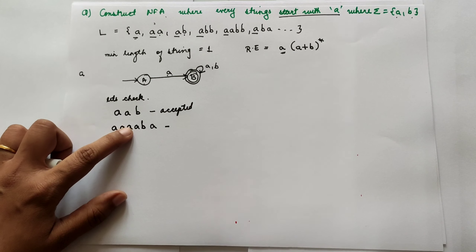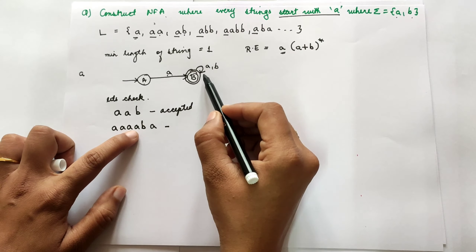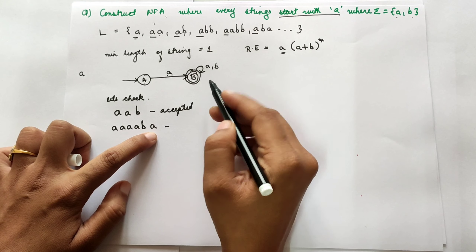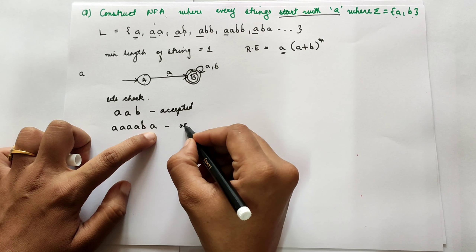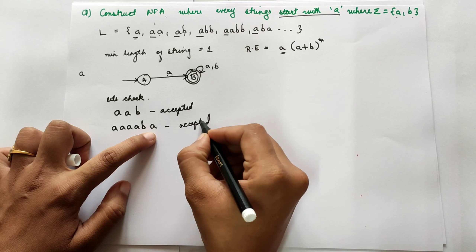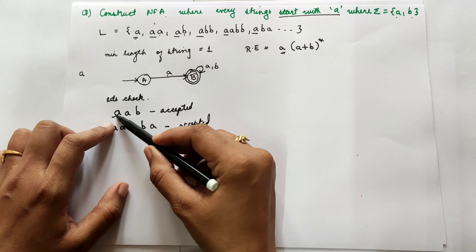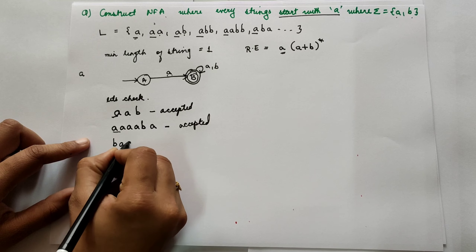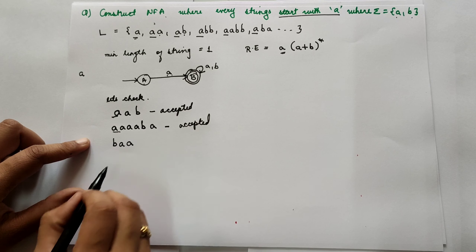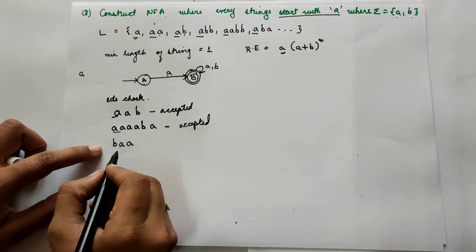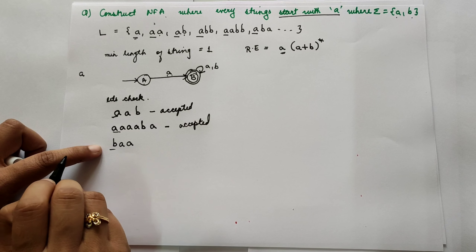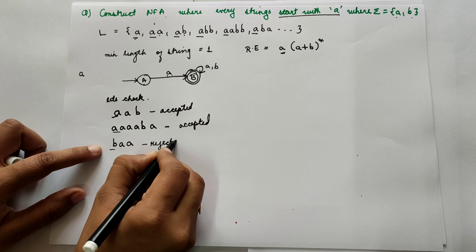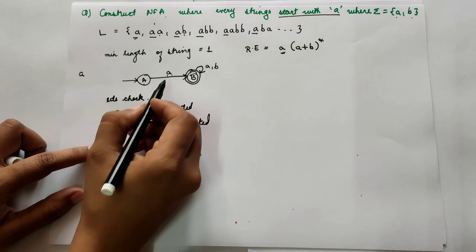Let's verify another string: A, A, A, A, B, A. It starts with A, so we move to the accepting state, and the remaining characters A, A, B, A loop back. It is also accepted since the condition of starting with A is satisfied. Now let's take the string B, A, A — it is not starting with A, so the condition fails and it is going to be rejected by this NFA.